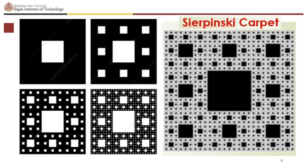Note that after the second iteration, it is 8 over 9 raised to the second power. After the third, it is 8 over 9 raised to the third power and so on. So the area of a Sierpinski carpet after n iterations is 8 over 9 raised to the nth power.